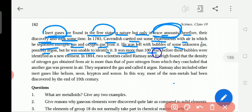It was more than 100 years before these bubbles were identified as a new element. In 1894, two scientists called Ramsay and Rayleigh found that the density of nitrogen gas obtained from air is more than that of pure nitrogen, from which they concluded that another gas was present in air.